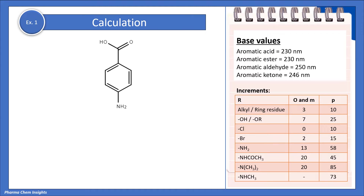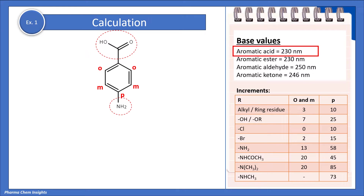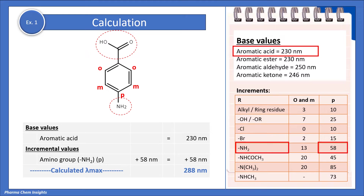Example 1: we have para-aminobenzoic acid. The base values and incremental values are kept ready for reference on the right-hand side of the slide. We have labeled the ortho, meta, and para positions for better understanding. There is a carboxylic acid group, so the base value for aromatic acid is 230 nm. We have an amino group at the para position; the increment for this is 58 nm. So 230 plus 58 gives us a lambda max of 288 nm for this compound.